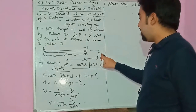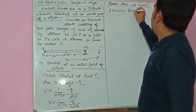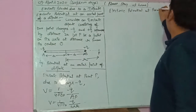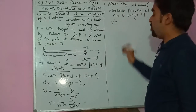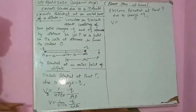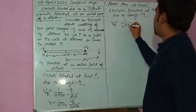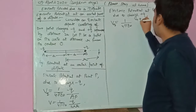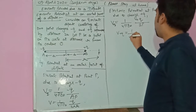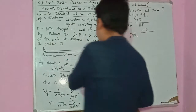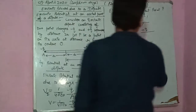Now calculate the electric potential at point P due to charge plus Q. V due to plus Q equals (1/4πε₀)(+Q/BP). The distance BP equals R minus A, since we subtract A from R. So V plus Q equals (1/4πε₀)(Q/(R−A)).